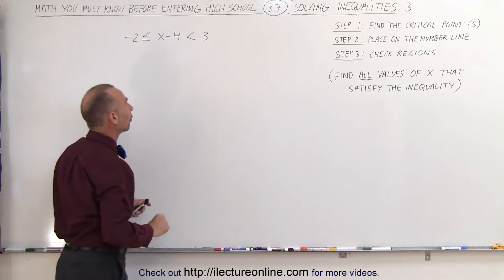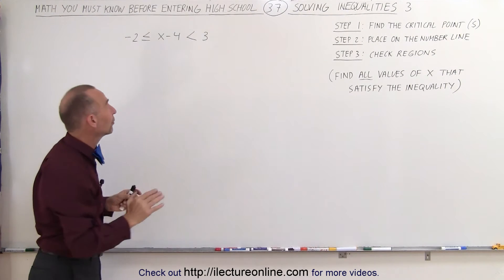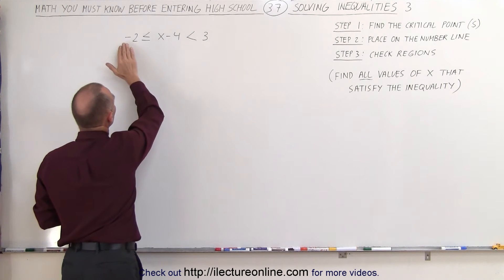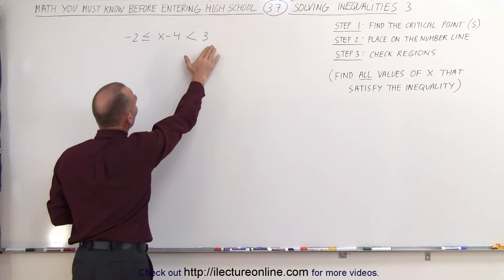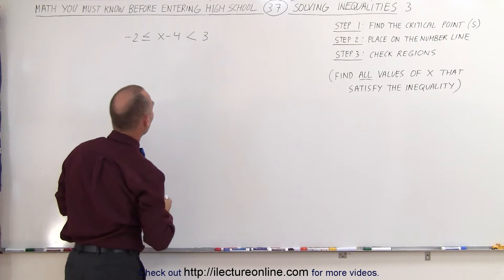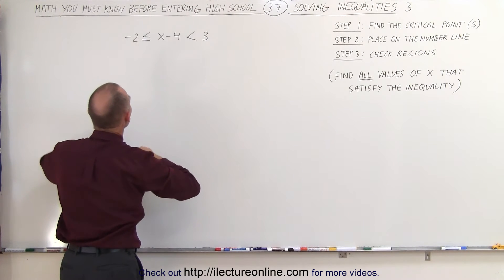We want to get rid of this negative 4. So what we're going to do is we're going to add the 4 to the left, to the middle, and to the right side of this inequality. So add a 4 to each portion of this inequality.